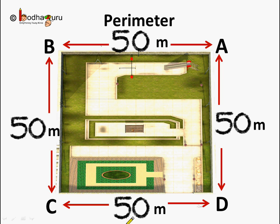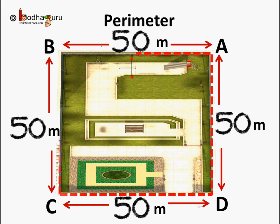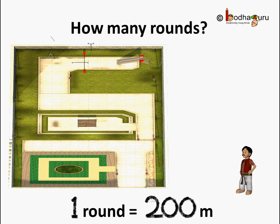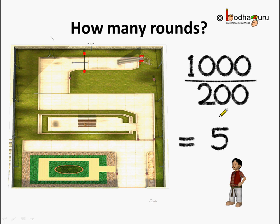And here it is equal to 200 meters. Now how many rounds should Manat Ram take in order to complete 1 kilometer? In one round he completed 200 meters, and he has to complete 1 kilometer. We know 1 kilometer is equal to 1000 meters. So if we divide 1000 by 200 we will get the number of rounds. 1000 divided by 200 is equal to 5. So Manat Ram needs to take 5 rounds of this garden, or he has to cover the perimeter 5 times to cover a distance of 1 kilometer.